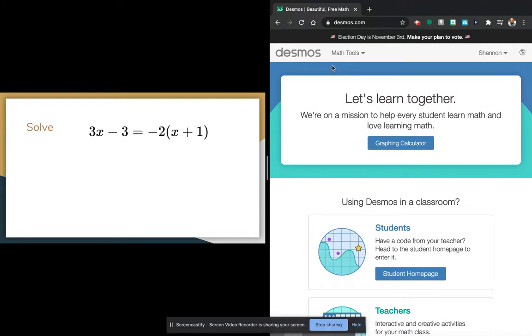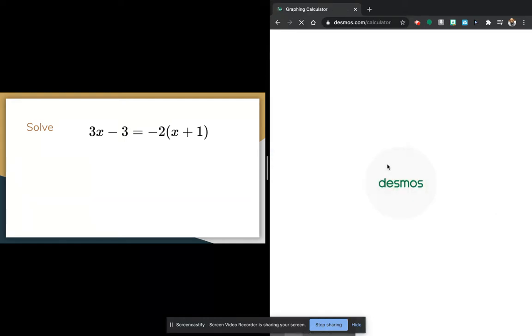You can use Desmos on your laptop, your tablet, or your cell phone. There's an app on your cell phone for this. So we're going to go to Desmos.com, click the Graphic Calculator button, and go to the graphing calculator here.